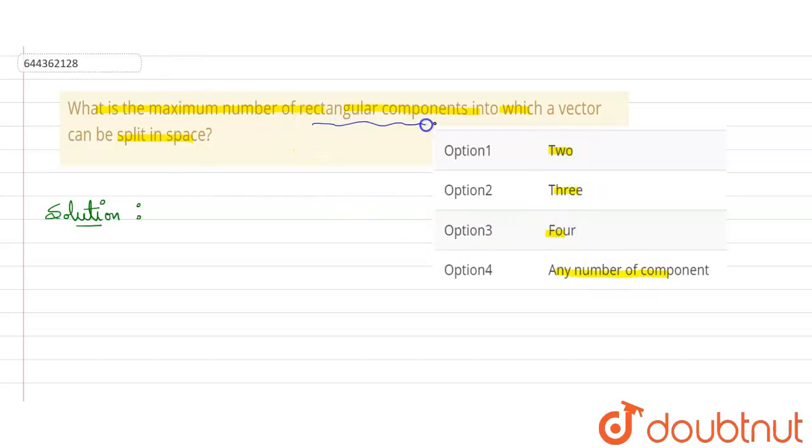Before explaining this, let me make a graph here. Rectangular component means, suppose this is my y-axis, similarly this is x-axis, and this is z-axis. We know this: y-axis, x-axis, and z-axis.